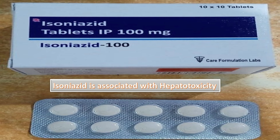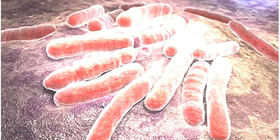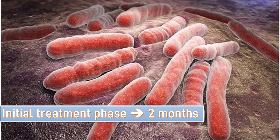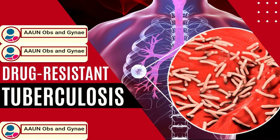Following drug susceptibility testing, if Mycobacterium tuberculosis is resistant to one of the first-line anti-tuberculous drugs except rifampicin, this should be considered drug-resistant TB. In drug-resistant TB, the initial treatment phase remains two months with a combination of three anti-tuberculous medications, but the continuation phase varies between four to seven months with two anti-tuberculous medications. If the organism is resistant to either rifampicin or to both rifampicin and isoniazid, it should be considered multi-drug resistant tuberculosis (MDR-TB).